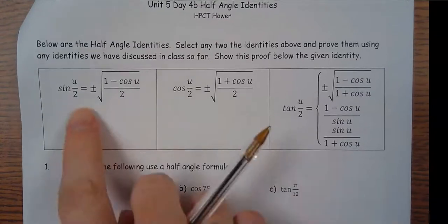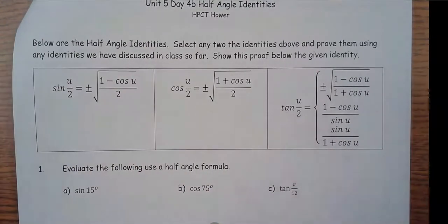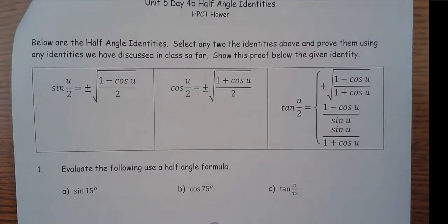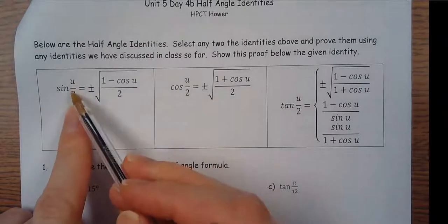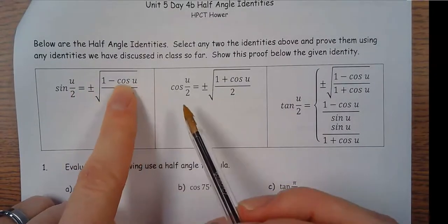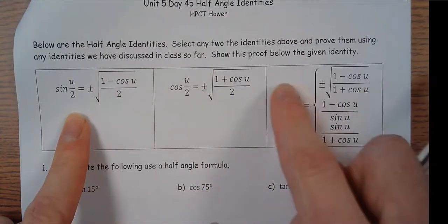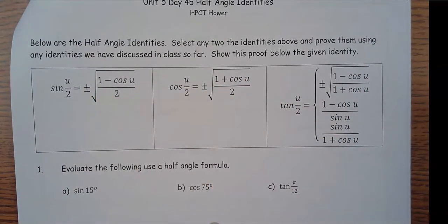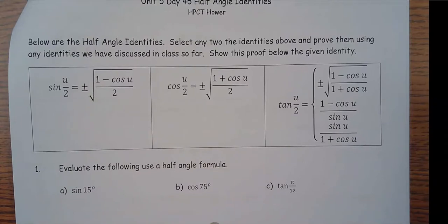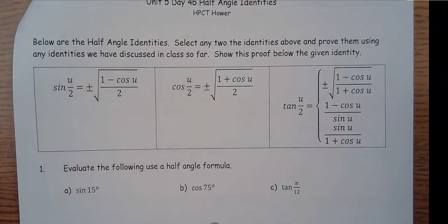If you've got u divided by 2, then you can plug that u in there. You'll see the plus and the minus on these top ones up here — you do have to think about what quadrant yours is in, the specific one you're doing. So it could be positive or it could be negative, depending on what quadrant it's in. You have to give a little bit of thought about that first, and then just plug it in and simplify.